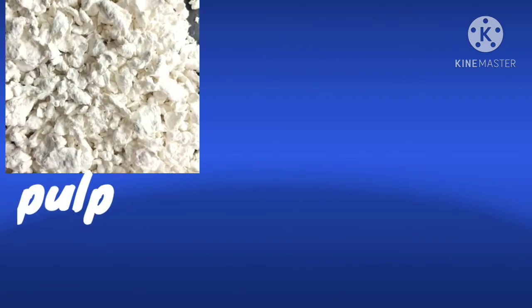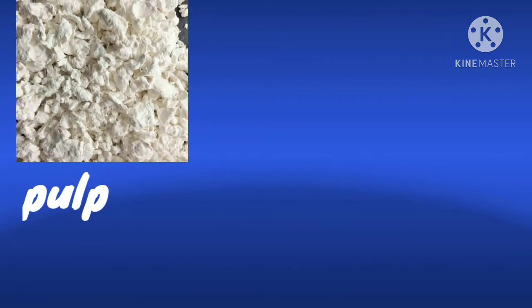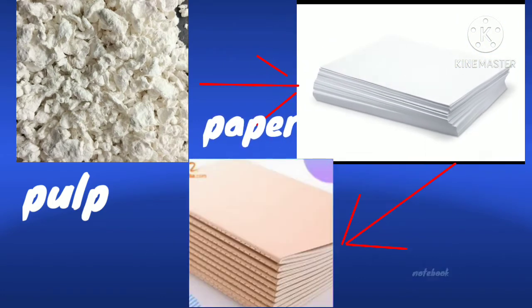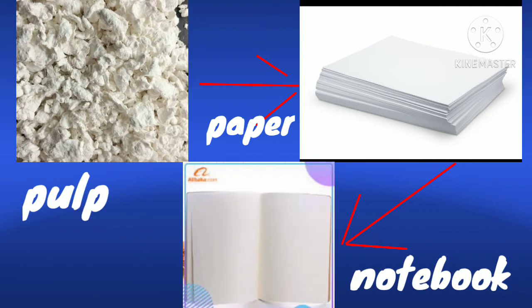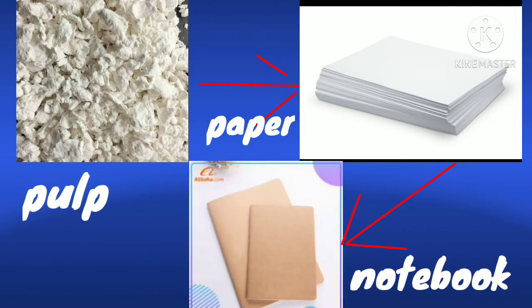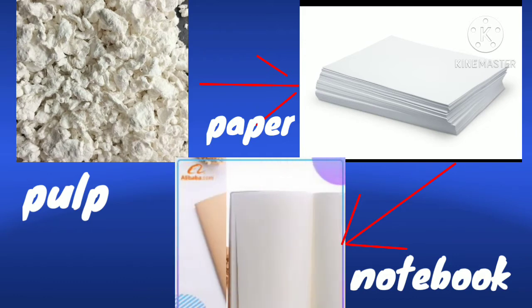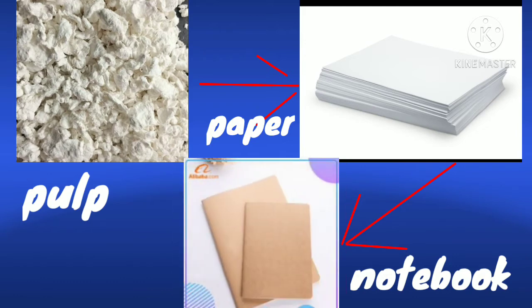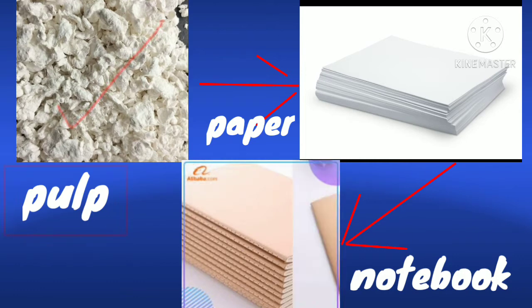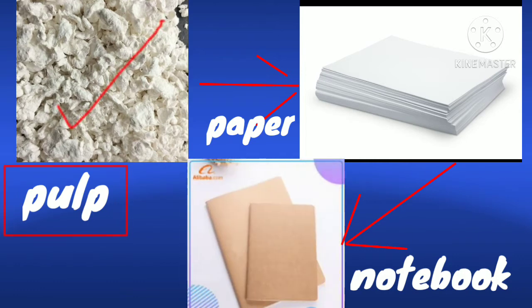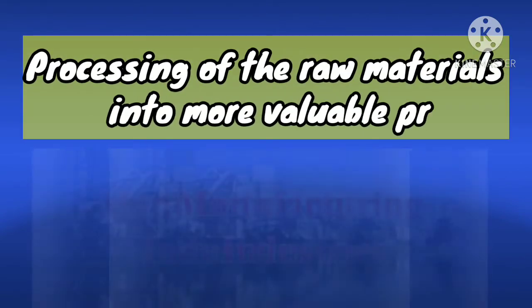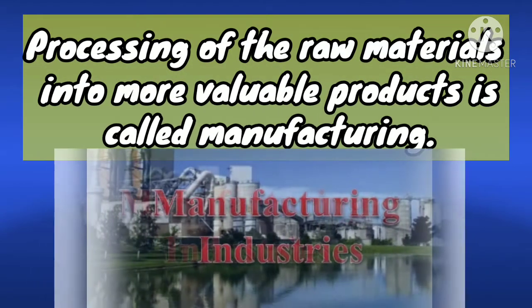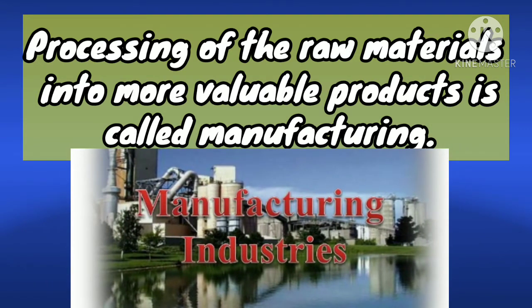For example, you must have seen pulp being changed to paper, and paper into a notebook, which has value added to it. The finished product — the notebook — has more value and utility than the raw material pulp it is made from. So, processing of raw materials into more valuable products is called manufacturing.